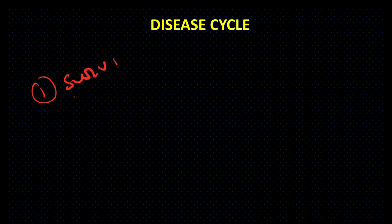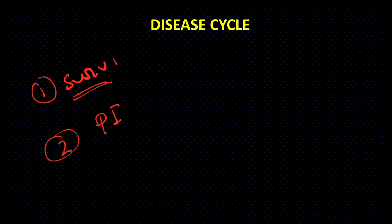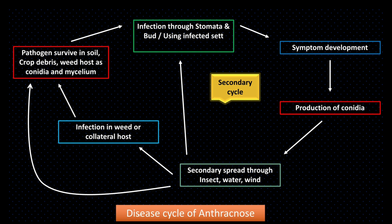Disease cycle: इसमें important points हैं — pathogen का survival कहाँ होता है, primary infection कैसे होती है, और secondary infection कैसे होती है। Pathogen survives in soil, crop debris, and weed host as conidia, mycelium, and chlamydospores — यानी pathogen soil में, crop debris में या weed host में इन रूपों में survive करता रहता है।